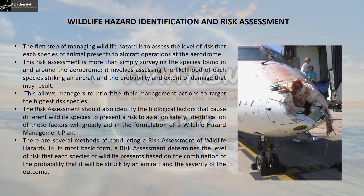Now let us understand how risks associated with wildlife hazards are identified and how assessments are carried out. The first step is to assess the level of risk that each species of animal poses to aircraft operations. For example, the risk posed by a sparrow strike is not the same as that posed by a strike from a large bird like the Asian open-bill — they have different severity when striking an aircraft. The risk assessment is more than simply surveying species found at and around the aerodrome. It involves assessing the likelihood of these species striking an aircraft, and the probability and extent of damage they may cause. This allows managers to prioritize management actions and target high-risk species.